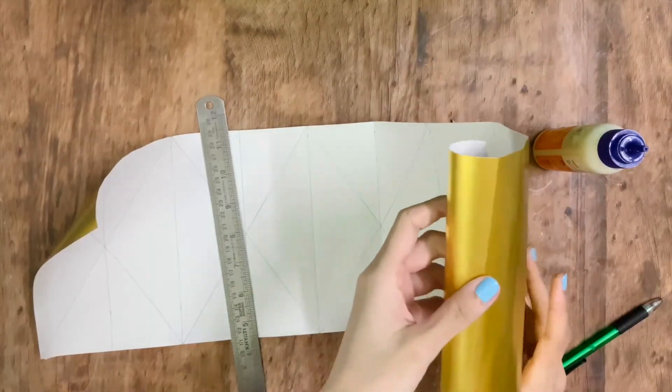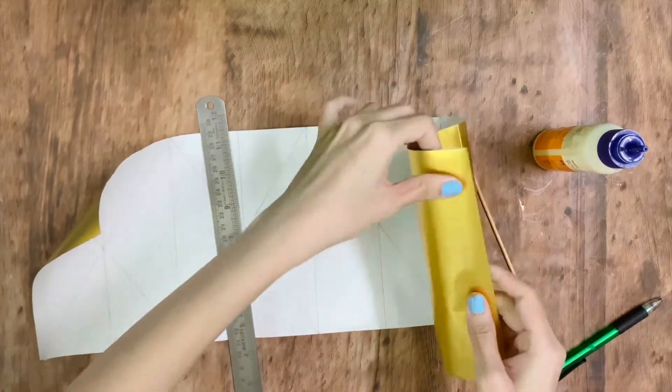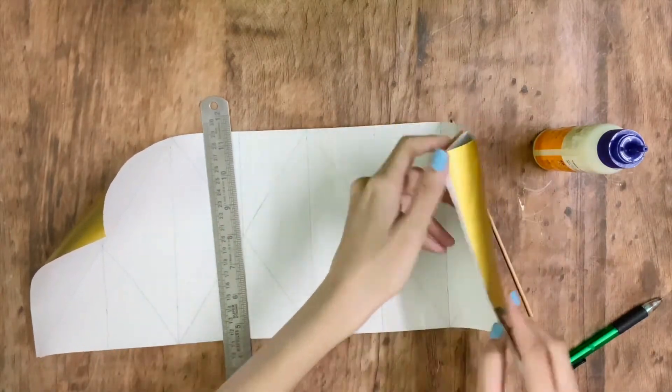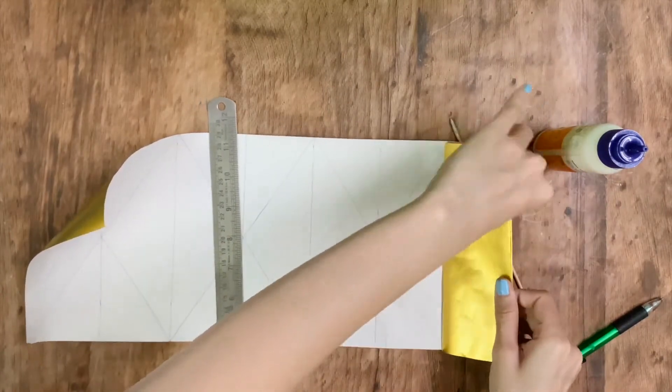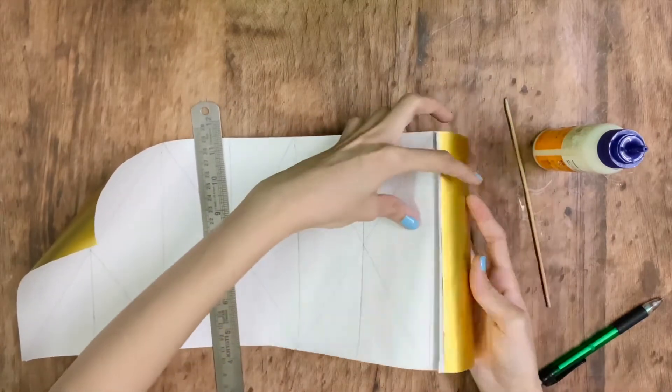Once you're done with that, fold the paper along those lines in a zigzag format. If one side goes inside, the other side goes outside like this.